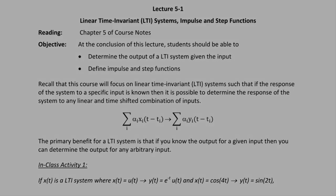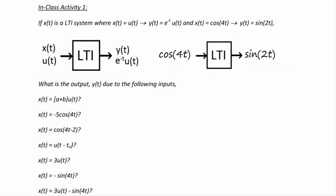Let's look at an example. If x(t) is an LTI system where x(t) = u(t) has the output y(t) = e^(-t) u(t), and if the input x(t) is cos(4t), then the output y(t) is equal to sin(2t). This can be represented by block diagrams showing u(t) going through the LTI system with e^(-t)u(t) coming out, and the second block diagram has an input of cos(4t) and an output of sin(2t).